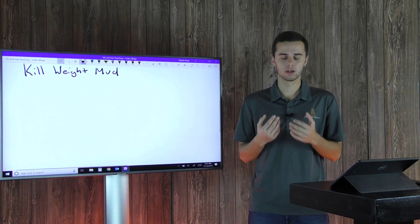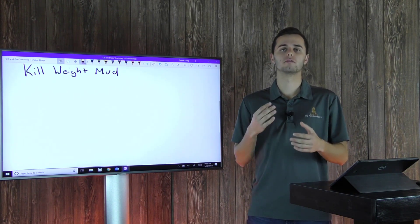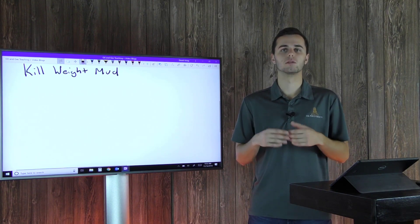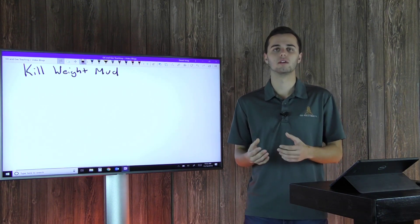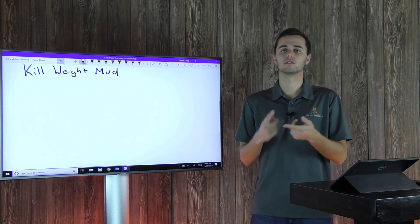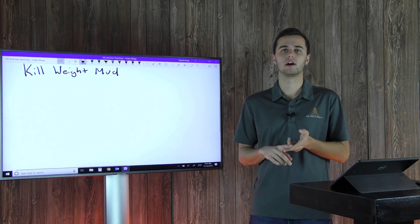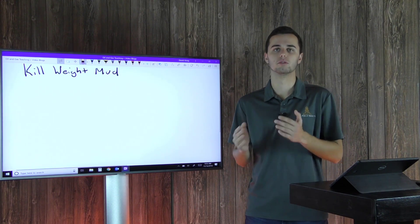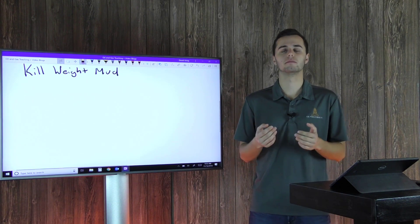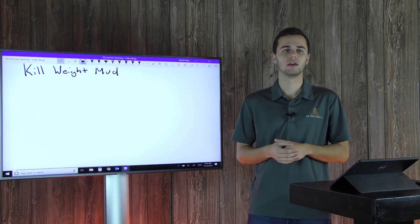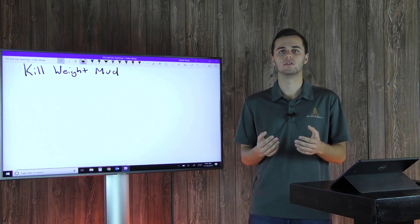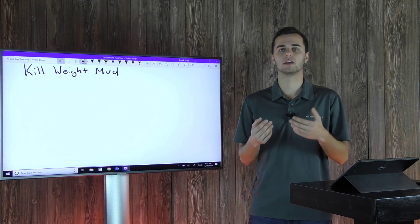So your Kill Weight Mud is the mud weight that will balance your formation pressures, and it will allow you to keep control of your well, thus reducing any loss of control which can sometimes lead to a blowout. And that's why your Kill Weight Mud is so important and why the equation is so useful in times when you may have a kick in your wellbore.